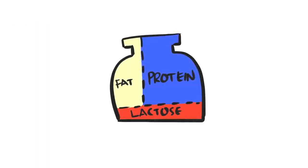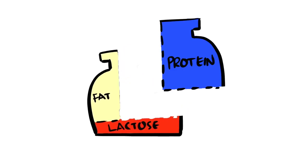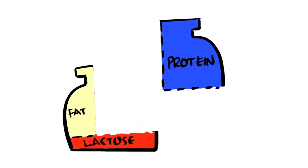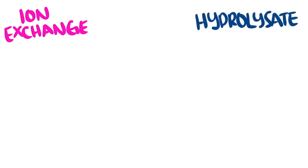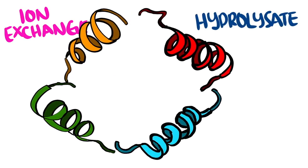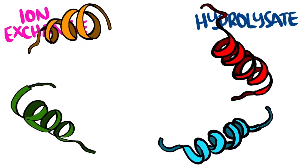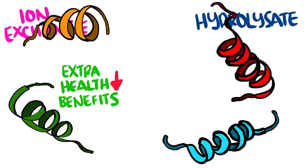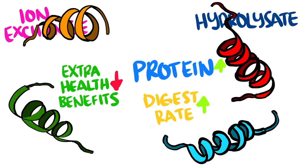Without getting too detailed on the different types of whey processing methods, just understand that each process has the goal of isolating the protein in whey from the lactose, carbs, and fats as much as possible. Problem is, some of the more intense separation methods, such as whey ion exchange and whey hydrolysate, tends to denature the proteins, losing the added health benefits for the sake of having more protein per gram and making the protein quicker to digest. Whether you consider having more protein or having added health benefits more important is your choice.